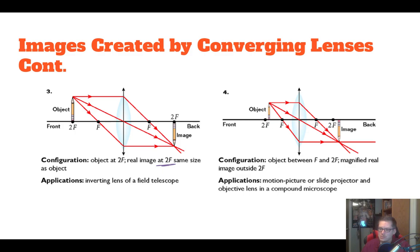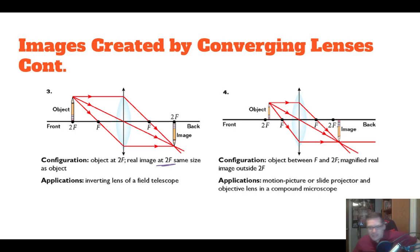If our object is between 2F and F, then our image gets placed beyond 2F and is magnified — notice how it's bigger. The object is smaller than the image. This is the exact opposite of what we just did, and that makes sense because we know that rays can go either way — they can be inverted forwards or backwards.